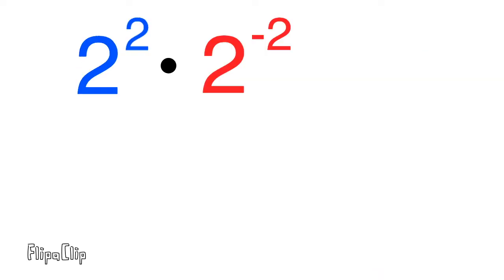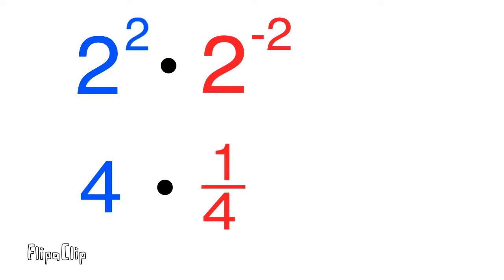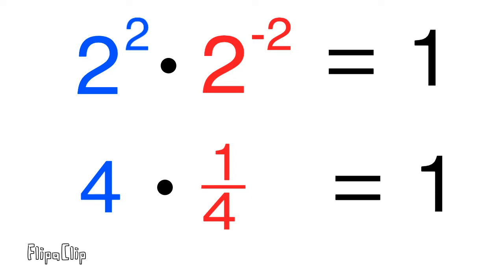Two to the power of two has a value of four, and two to the power of negative two has a value of one fourth. So four times one fourth, or one fourth of four, is equal to one. Therefore two to the power of two times two to the power of negative two must also equal one.